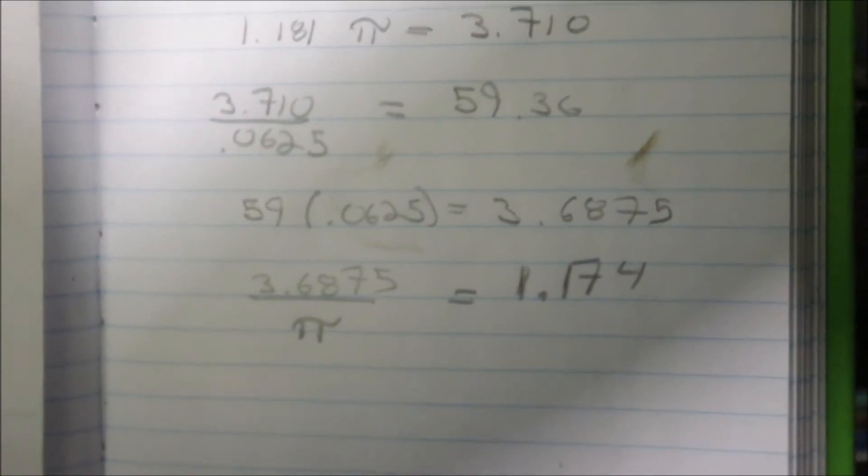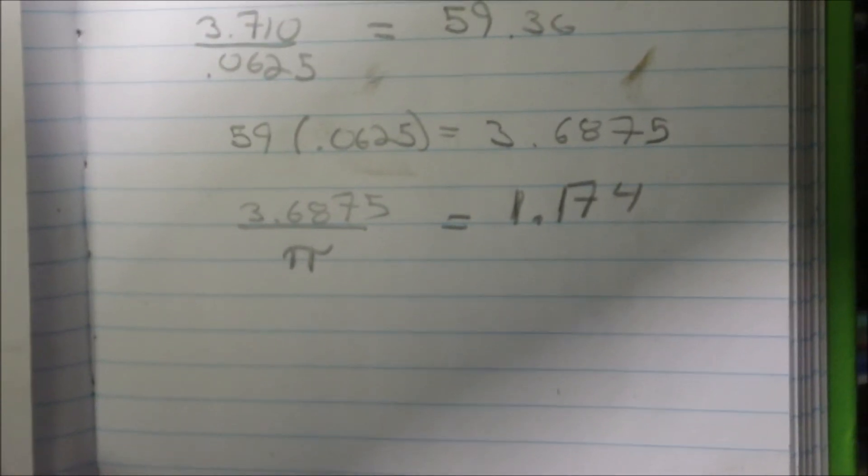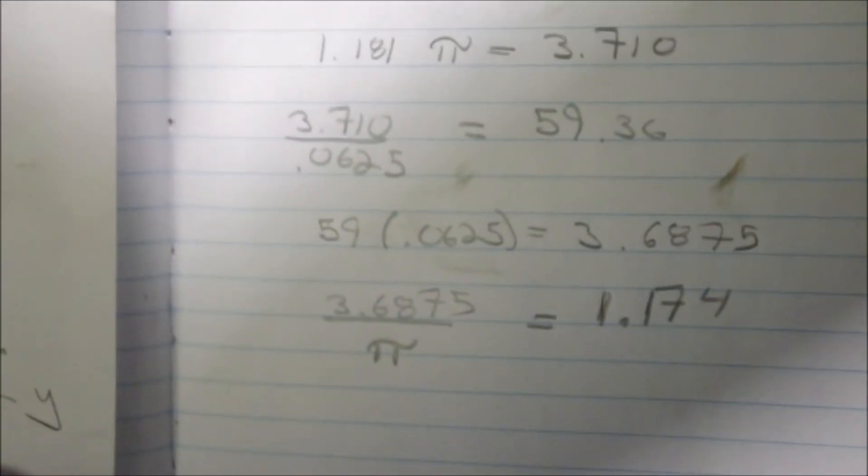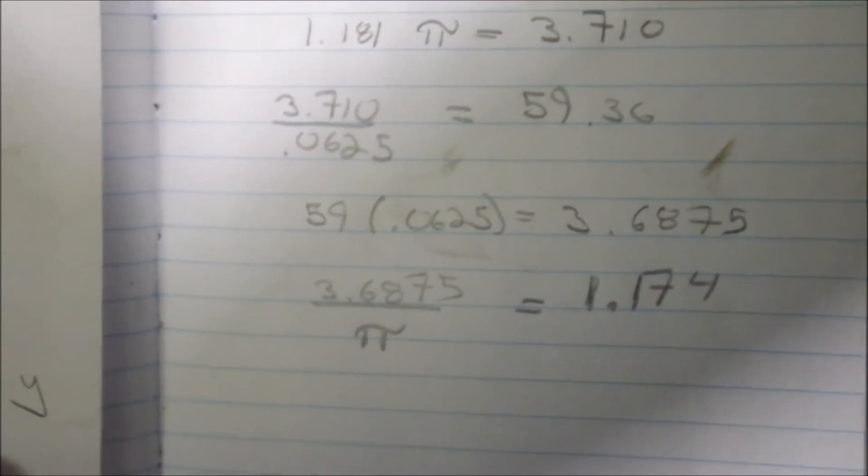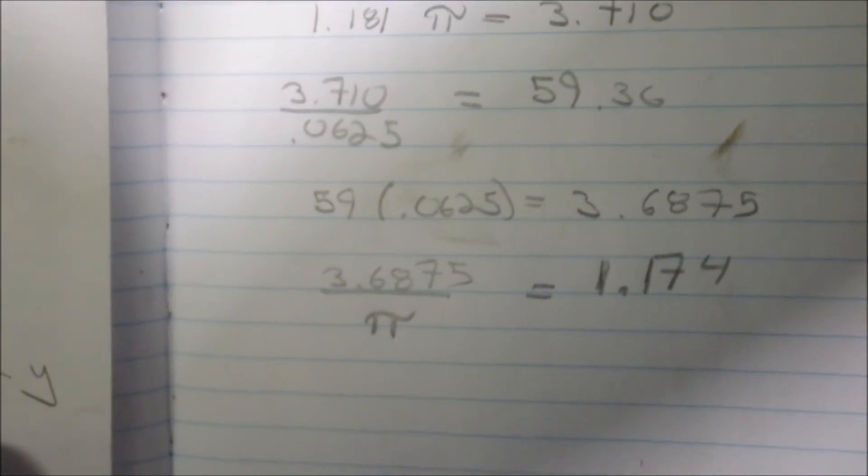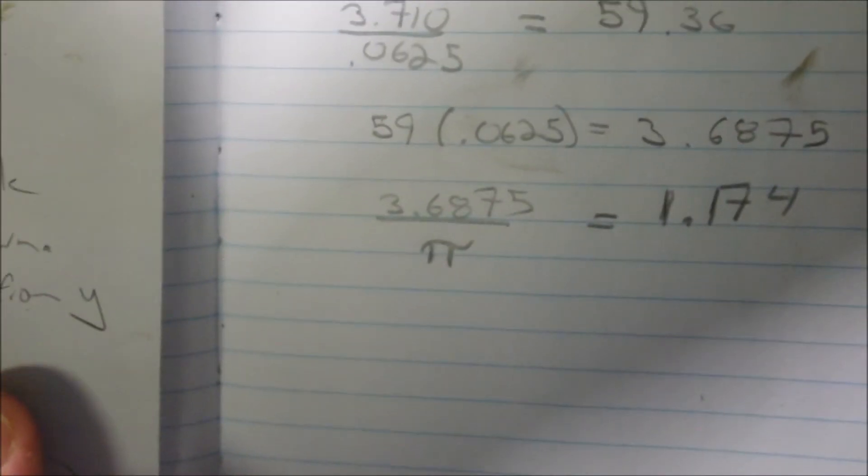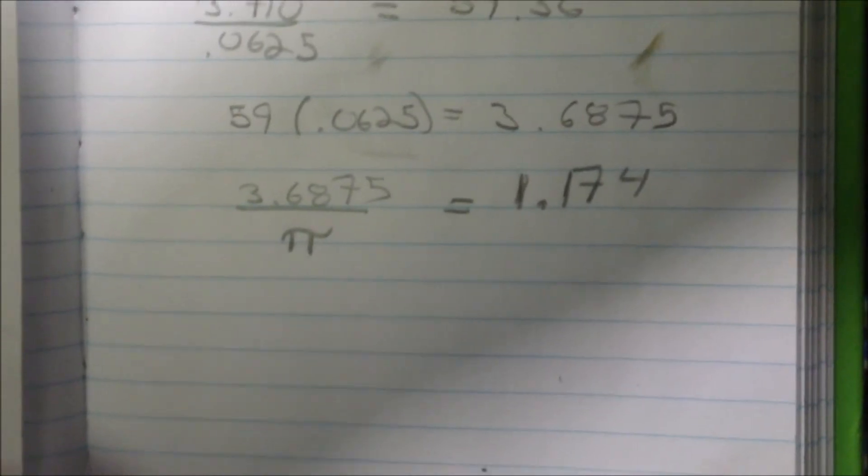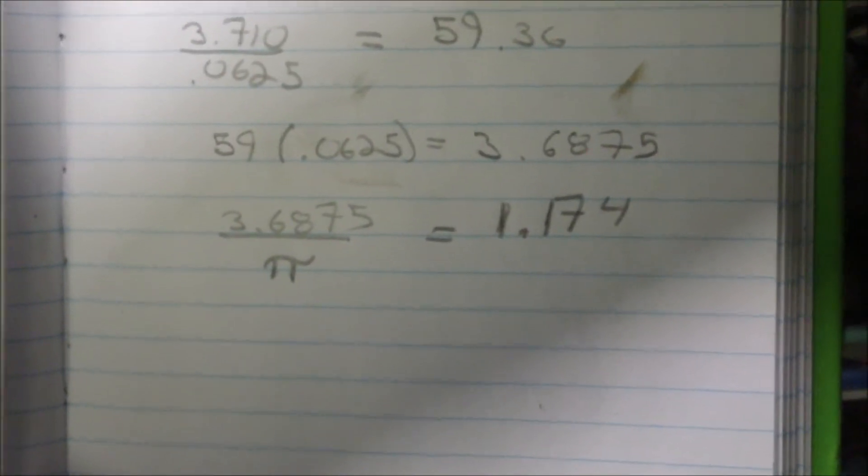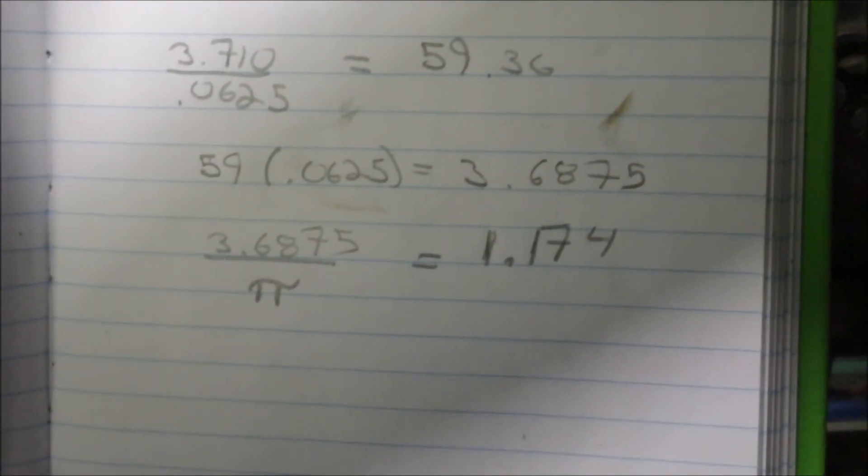And you wind up with a desired diameter. You divide that diameter by pi. You get your actual—excuse me, your circumference is what I've been meaning to say when I've said diameter. You divide that circumference by pi, you get your desired diameter, which in my case was 1.174.